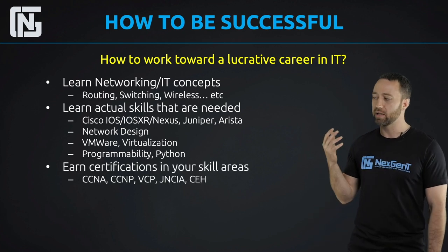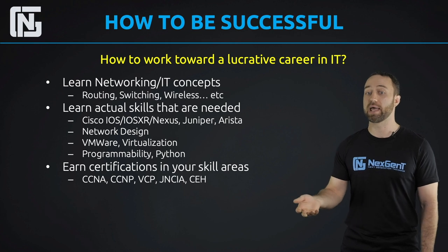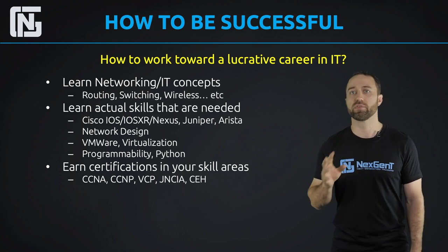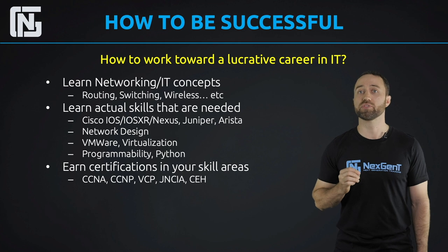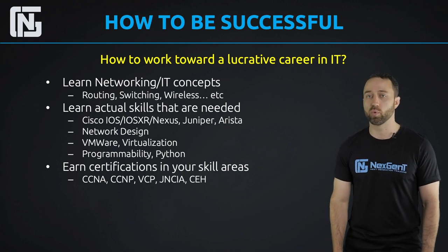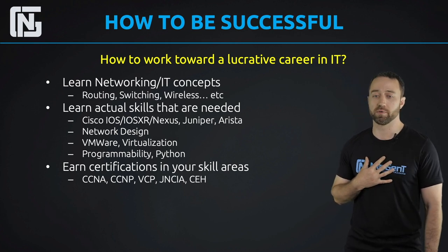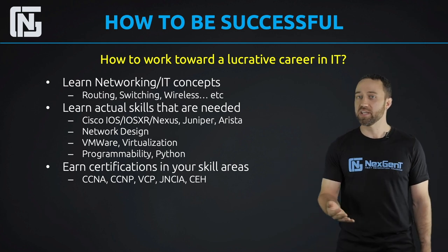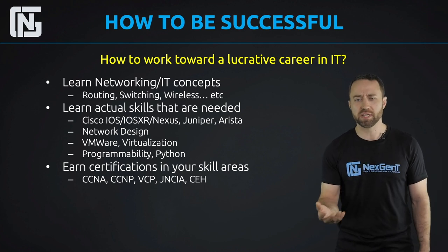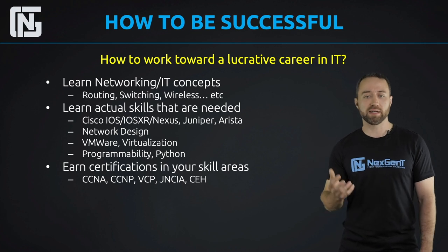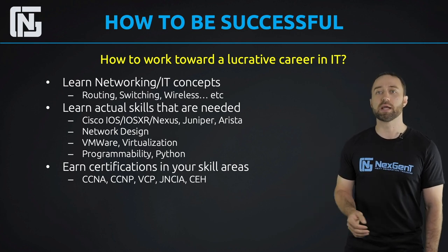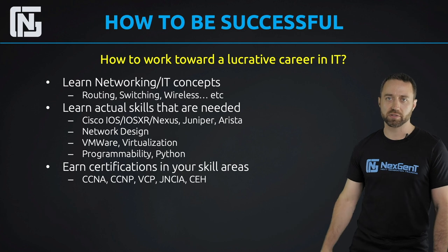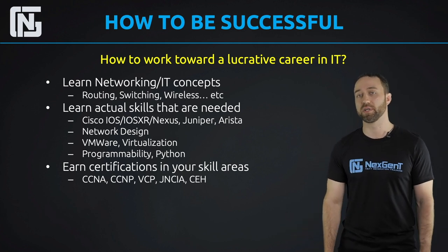Next, earn certifications in your skill areas after you've actually learned the skills — don't jump straight to certifications first. Learn the skills, then work on certifications around those skills. Skill areas include enterprise networking — the CCNA and CCNP for Cisco, the VCP for VMware, the JNCIA for Juniper associate level, and the CEH (Certified Ethical Hacker) for cybersecurity. You generally start with enterprise networking and then branch out from there.